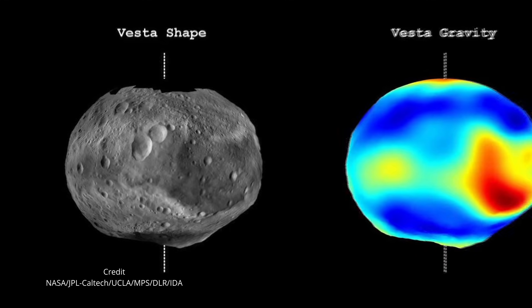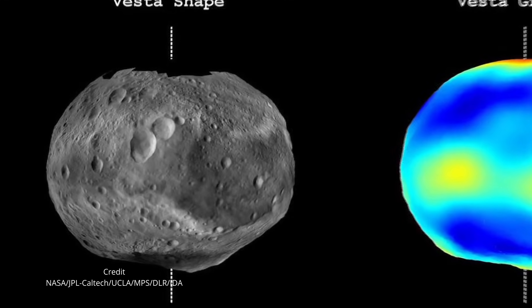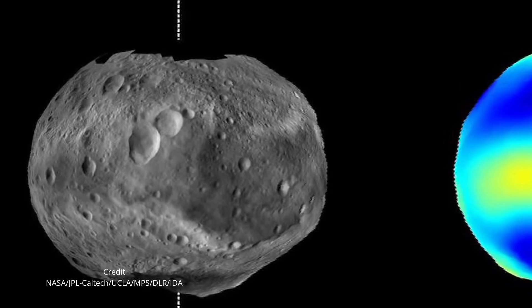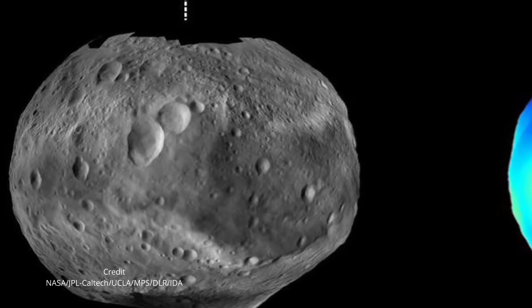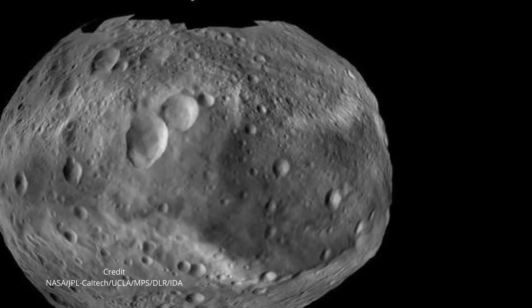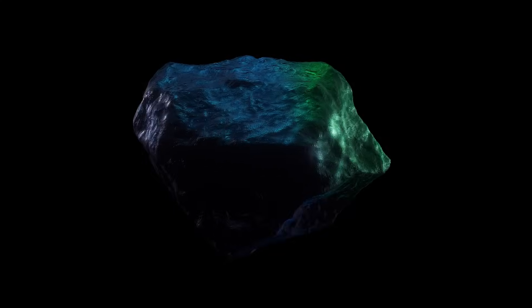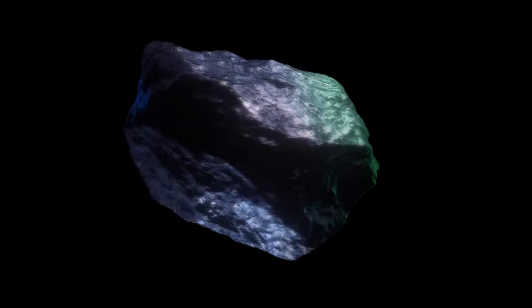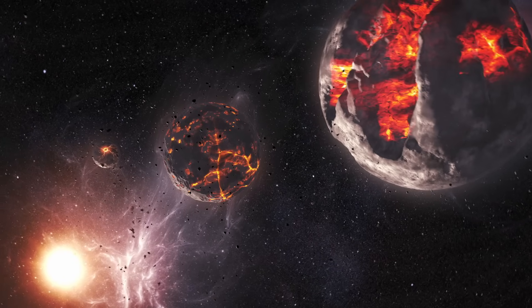Its surface is dominated by a colossal impact basin named Rhea Silvia, the scar of a collision so violent it nearly shattered Vesta and blasted pieces of its crust all the way to Earth, which we find today as a specific class of meteorites. Vesta survived. Another protoplanet likely did not.